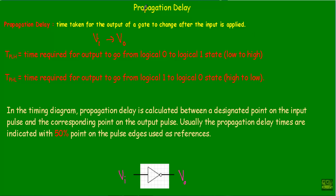In this video I will talk about the topic propagation delay of a logic gate. When we apply any logical input to any logical device, we get the output response after a brief interval of time. That means we don't get the output response at the same instant we applied the logical input. The time delay between the input we applied and the output response we obtained is known as propagation delay. Propagation delay is the time taken for the output of a gate to change after the input is applied.